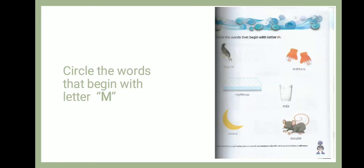Now children, I have an exercise for you. See what is written here — circle the words that begin with letter M. So you can see there are many pictures. So M for mouse; mouse starts with letter M, so we circle the mouse.